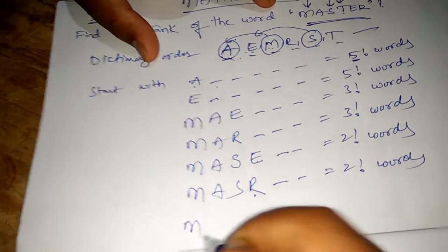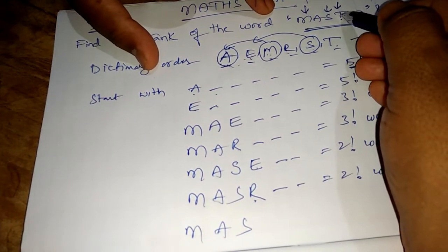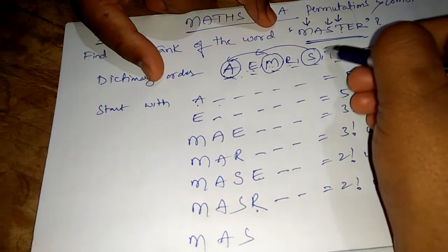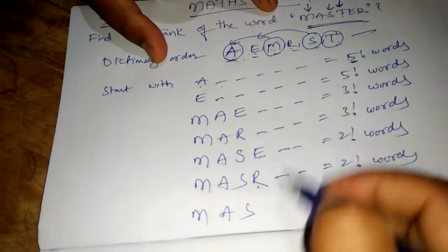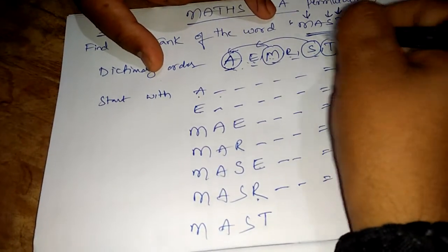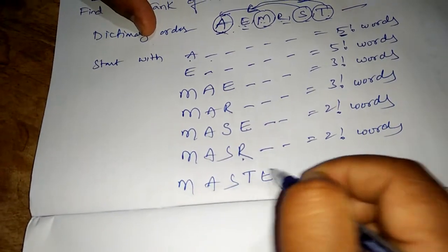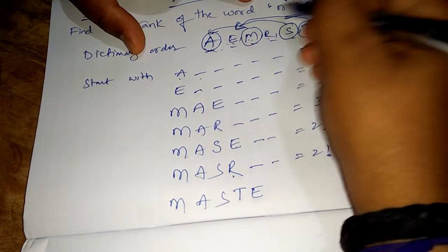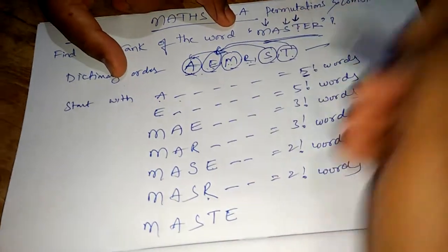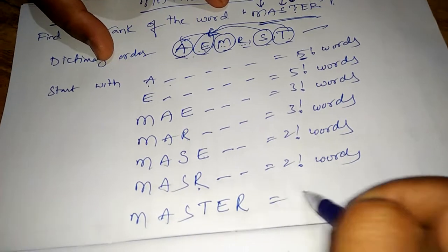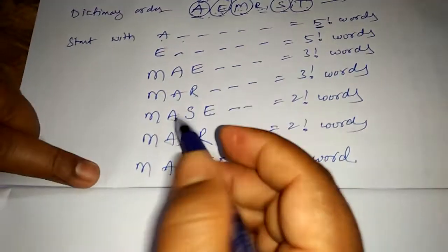Next is T — T matches our fourth letter. I write T and go back to the dictionary order. A is already used; next is E — E matches our fifth letter. I keep it. So our required word MASTER is found. This accounts for one word.